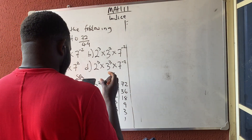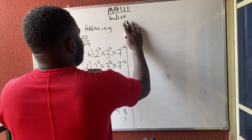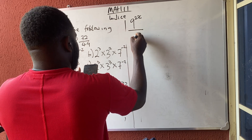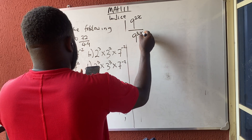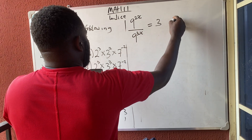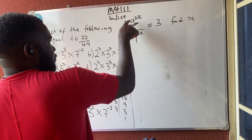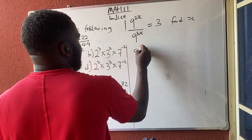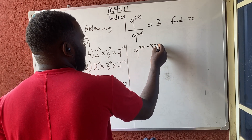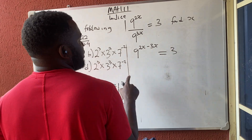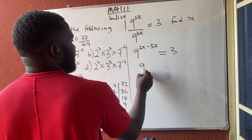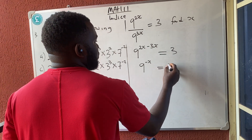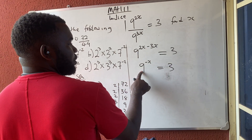Next question: if I have 9 raised to power 2x, all over 9 raised to power 3x, is equal to 3, find x. Let's apply the law — since I have division and the bases are the same, I do 9 raised to power 2x minus 3x, which equals 3. So I have 9 raised to power minus x, because 2x minus 3x is minus x, is equal to 3.